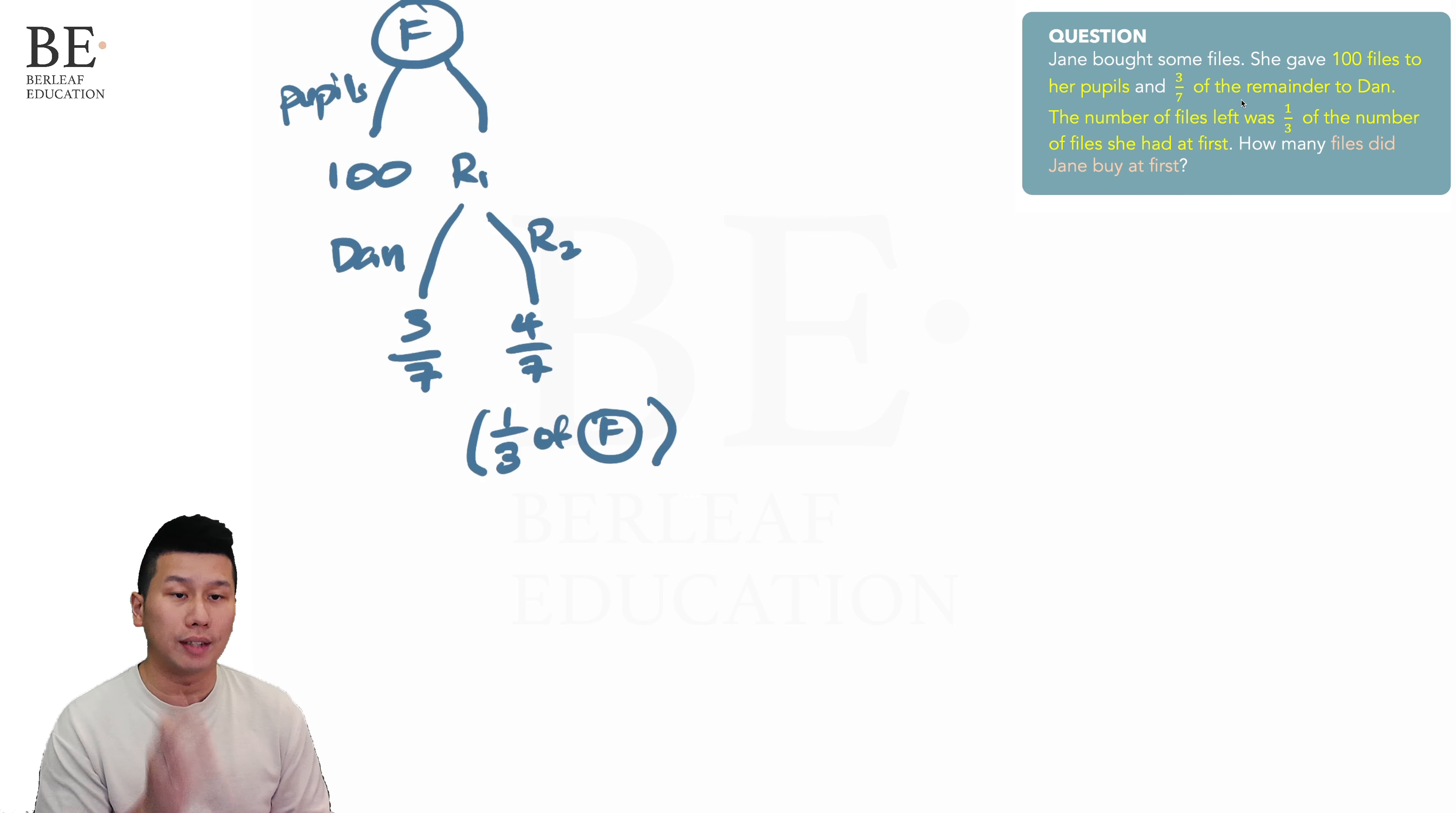If we can find what R sub 1 is as a fraction, it would help us to determine what actually 100 represents in fraction and thereby allow us to solve the entire question. To do that, we can simply find the fraction of R sub 1 out of the files.